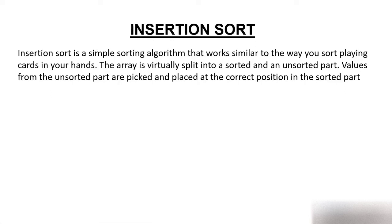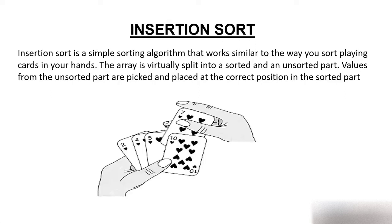The array is virtually split into a sorted and an unsorted part. You start picking a card from the deck and keep it sorted. Values from the unsorted part are picked and placed at the correct position in the sorted part. For example, if cards 2, 4, 5, 10 are sorted and you pick 7, you shift 10 and insert 7 between 5 and 10. Because of this technique, it is known as insertion sort.